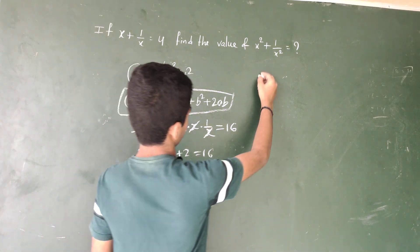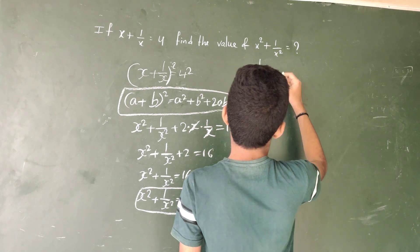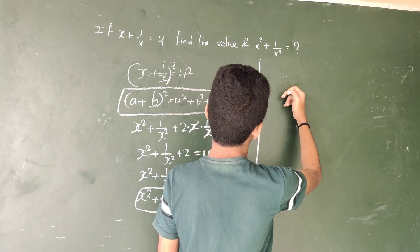Answer is 14. This is the theory process. We used the a plus b whole square formula. We have an easier method.